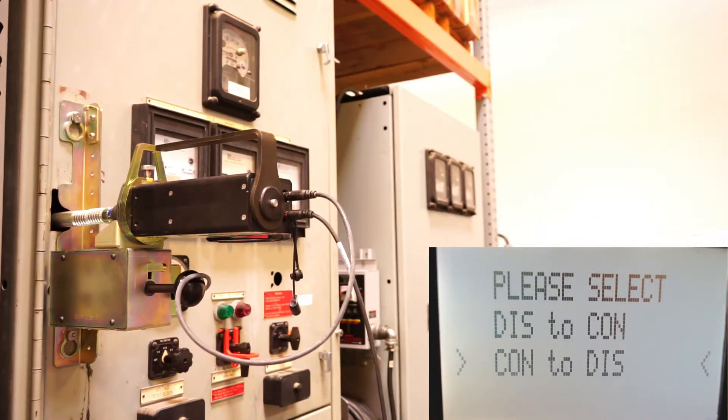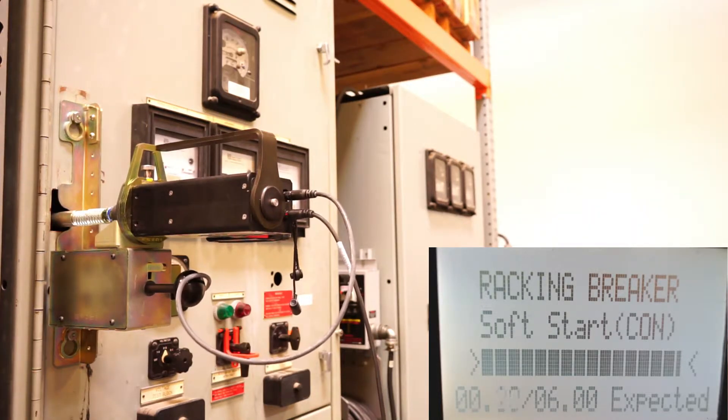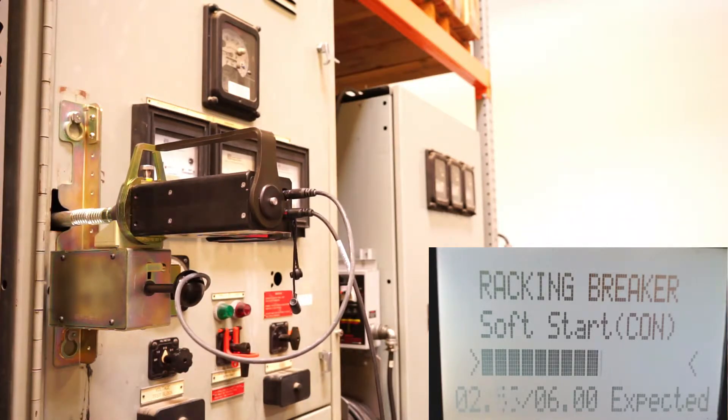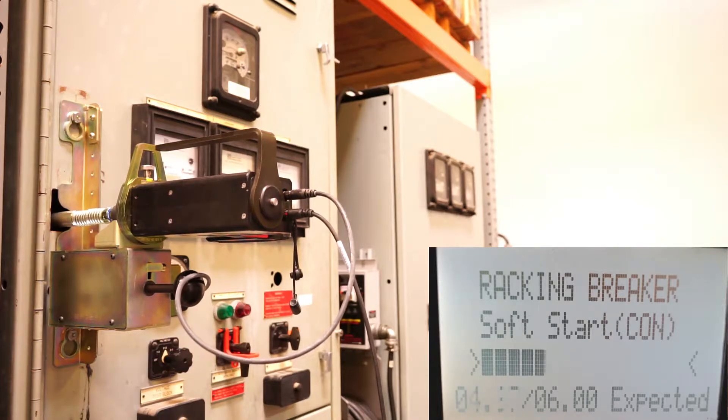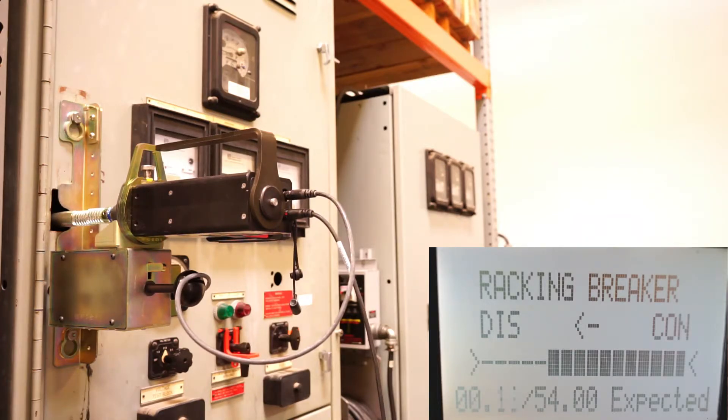So I'm going to select connect to disconnect. And so you can see it does what we call a tooling gauge. And then starts at a soft start. So you can see on the screen we have an expected turn count and a real-time turn count as it's moving. And then we're in the main body or the main portion of the racking now. So you can see we're racking from disconnect to connect or connect out to disconnect. 54 expected turns and then you can see your real-time turn count here as it's moving.